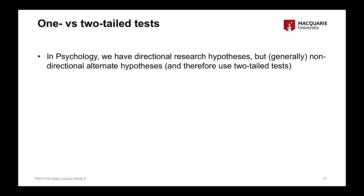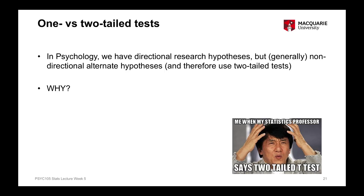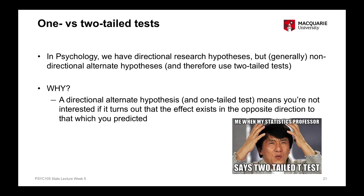In psychology, we tend to have directional research hypotheses but non-directional alternate hypotheses, and therefore we use two-tailed p-values. The reason is that if you use a directional alternate hypothesis and therefore a one-tailed test, it means you're not interested in whether there's an effect in the opposite direction to what you predicted. With a directional alternate hypothesis, we can't actually see if there's evidence for an effect in the opposite direction.